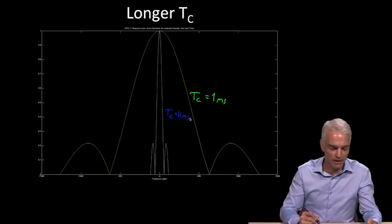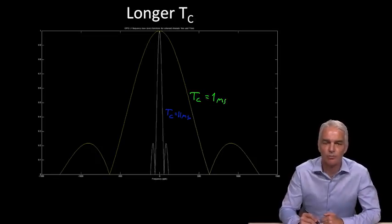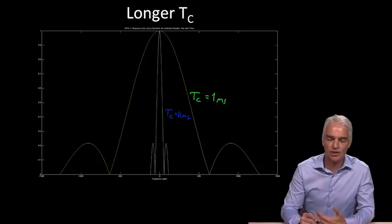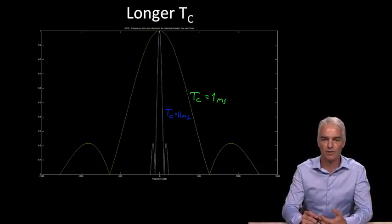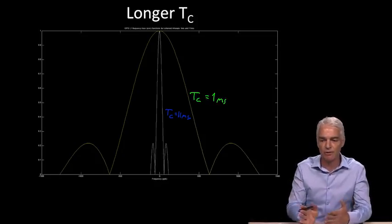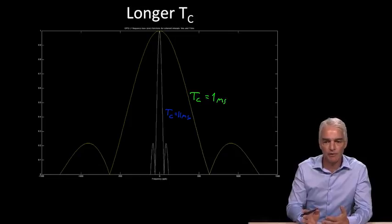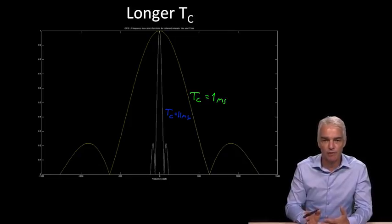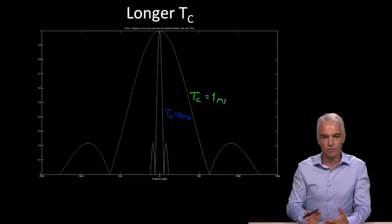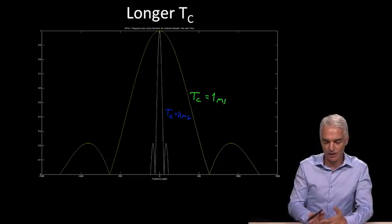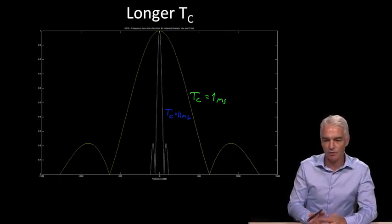This one was Tc equals 1 millisecond, and this one in the middle is Tc equals 11 milliseconds. When we've just looked at assisted GPS, one of the benefits of narrowing the search space is there's less to search, and therefore we could spend longer integrating in each frequency bin.